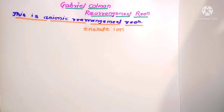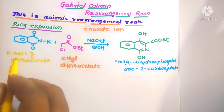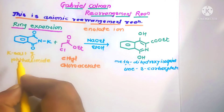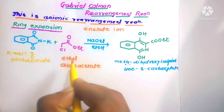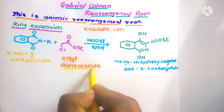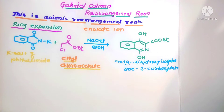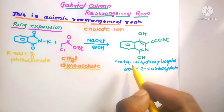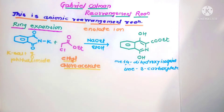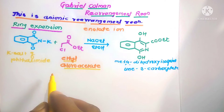In the general reaction, the potassium salt of phthalimide is reacted in the presence of ethyl chloroacetate, sodium ethoxide, and ethanol to form the final product of this reaction. Now we can explain the detailed mechanism of Gabriel-Coleman rearrangement reaction.